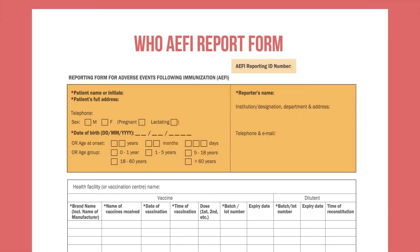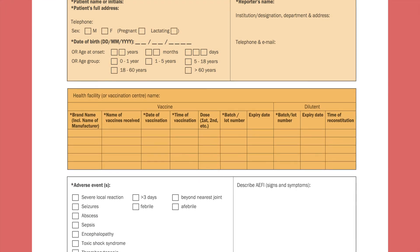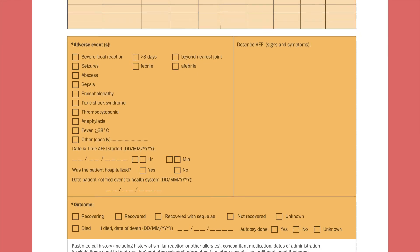Include information about the patient, caregiver, and the reporter of the adverse event — in many cases, the caregiver is the reporter. Include details of all vaccines given to this patient: start with the brand name of the vaccine including the name of manufacturer, the date and time of vaccination, dose of the vaccine given, and information about any diluents used including generic and brand name. For each vaccine received, write its expiry date and the batch or lot number. Thoroughly describe the AEFI itself, including the symptoms, date and time of onset of AEFI, and outcome as described by the caregiver or reporter.